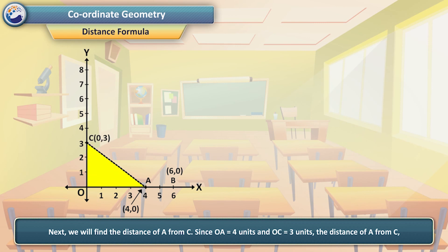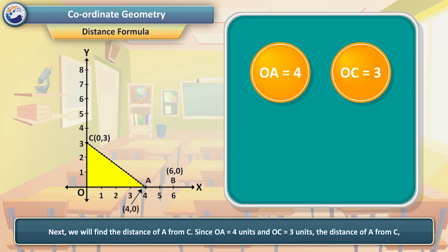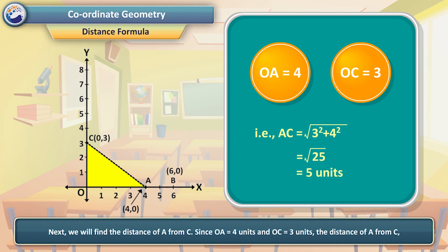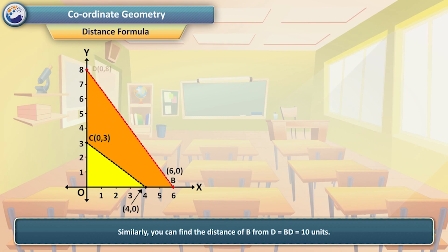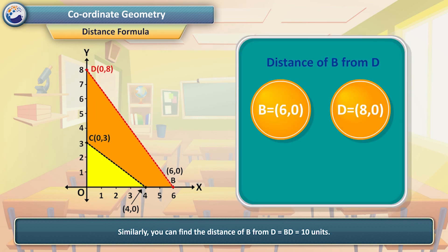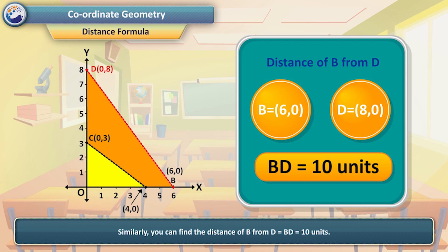Next, we will find the distance of A from C. Since OA = 4 units and OC = 3 units, the distance AC is equal to √(3² + 4²) = √25 = 5 units. Similarly, you can find the distance of B from D: BD = 10 units.